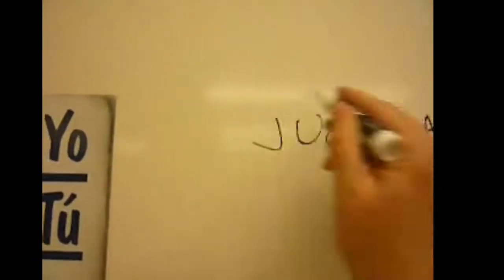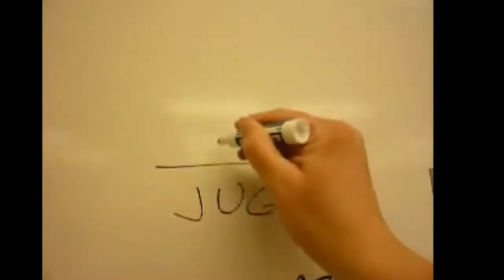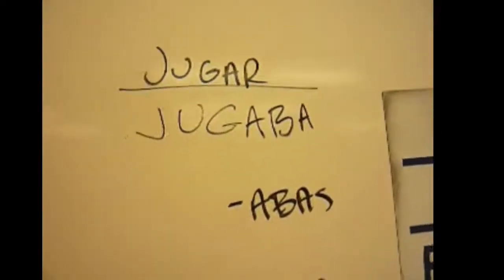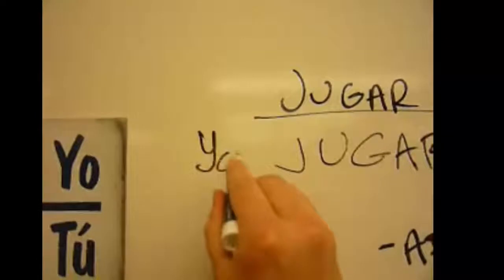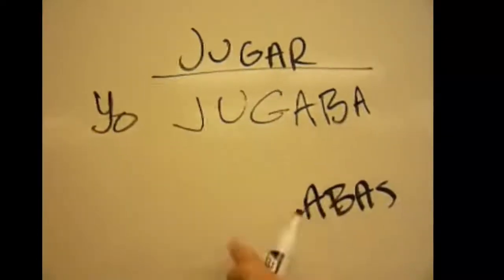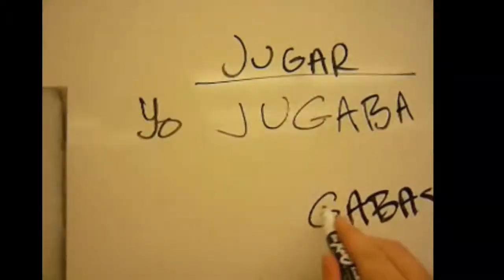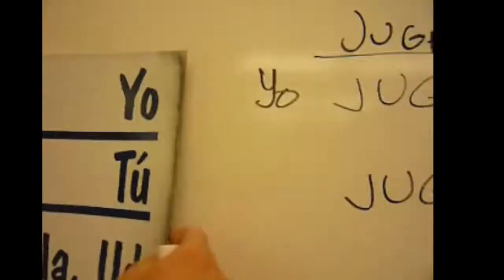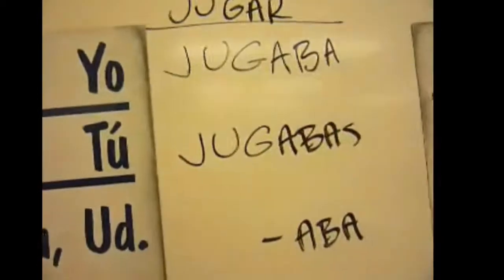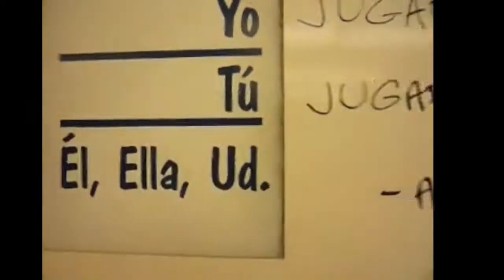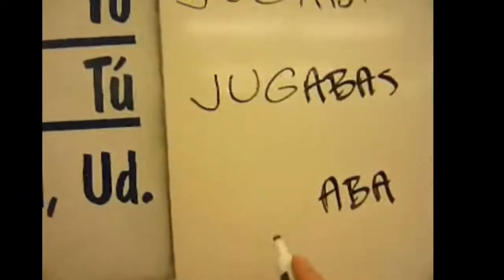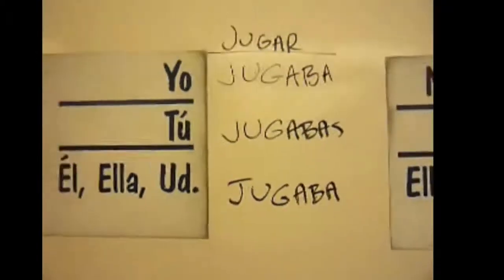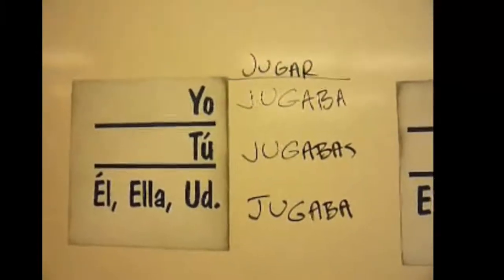Let's throw in a real verb instead of just the endings. Jugar — a common verb meaning 'to play.' Here's what it looks like: yo jugaba — I used to play or I was playing, not 'I played yesterday.' Tú jugabas — you used to play. Él, ella, usted — jugaba.